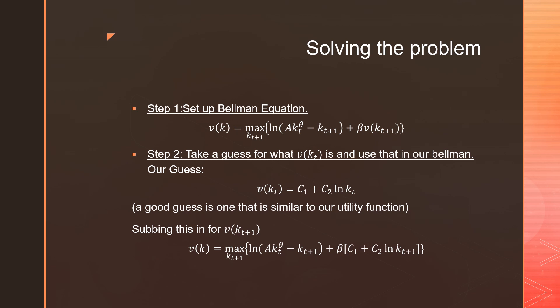So step number one, set up Bellman equation. That's just what it is corresponding to our sequential problem from before, is that we're going to maximize this log(Ak_t^theta - k_{t+1}). So that is just solved by rearranging our resource constraint plus beta times the value function in the next period as a function of capital stock in the next period.